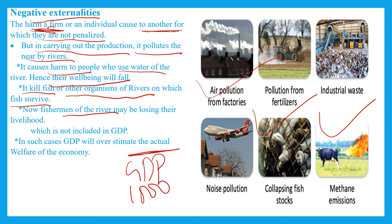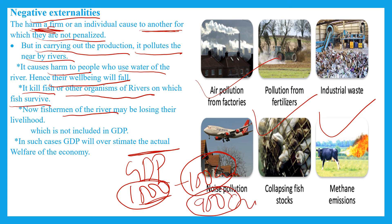So, when the actual welfare of the economy is 1000 crores worth of goods and services but negative externalities reduce the real welfare, GDP still shows 1000 crores when actually welfare is only 900 crores. In this case, GDP overestimates actual economic welfare — GDP shows 1000 but actual welfare is 900 crores.